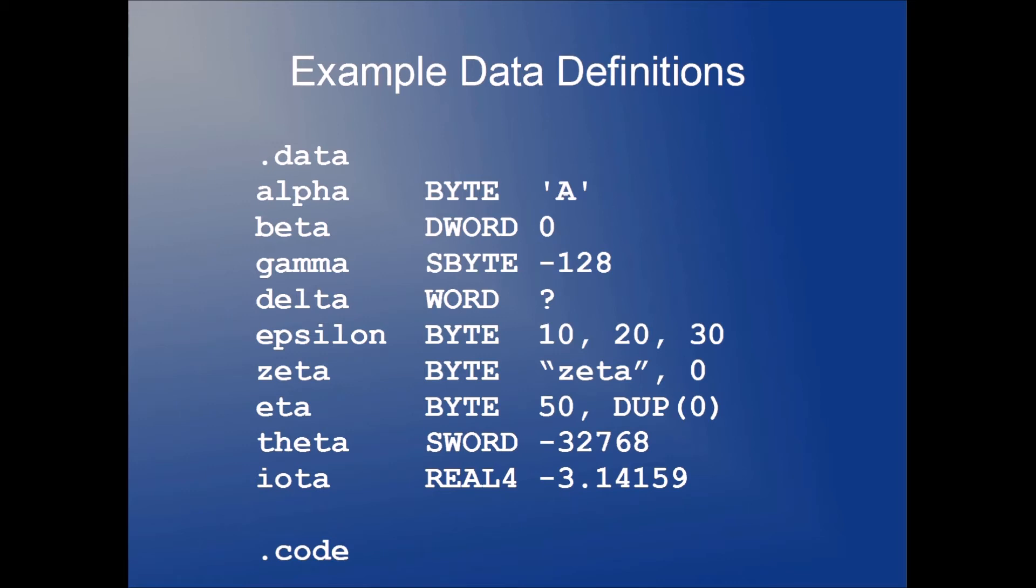We have a variable named beta, which is of type double word. And it has a single initializer, zero. So beta is a variable that's been initialized to zero. We've got a variable gamma, which is a signed byte. So we've initialized it to negative 128.